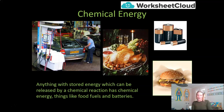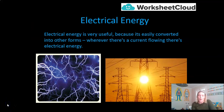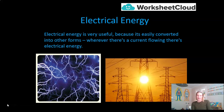One of the most useful energies to us as humans is electrical energy, and it's so useful because it can be converted so easily into many different forms of energy. Wherever there's an electrical current flowing, there's electrical energy. The second I plug in my hairdryer, electrical energy is going to be flowing through it and then be converted into heat energy as it comes out of the hairdryer to dry my hair.